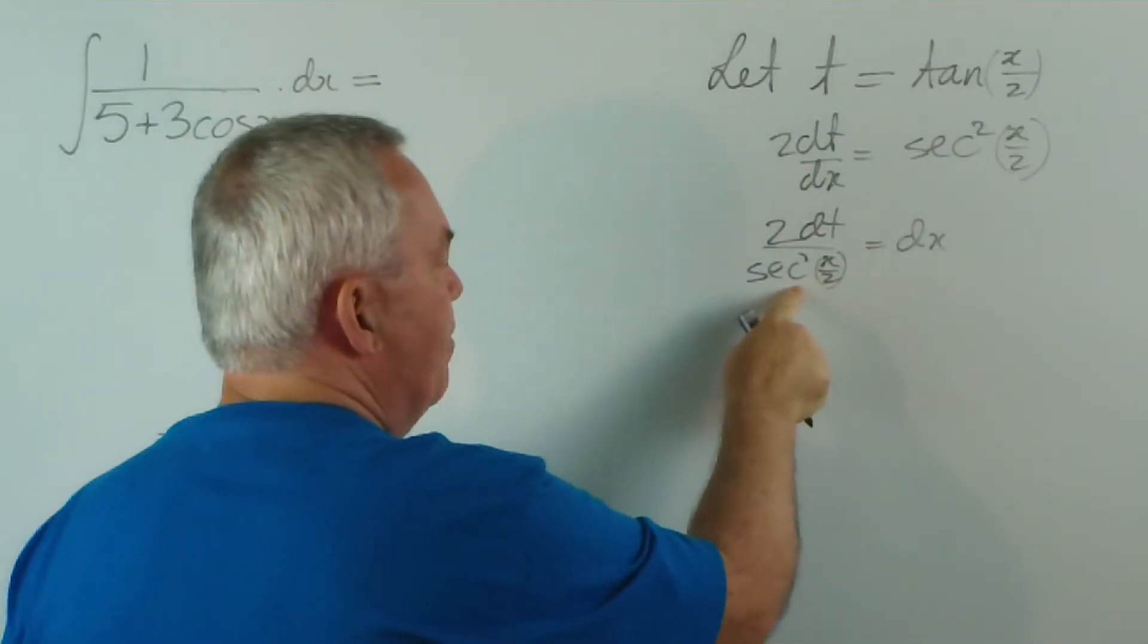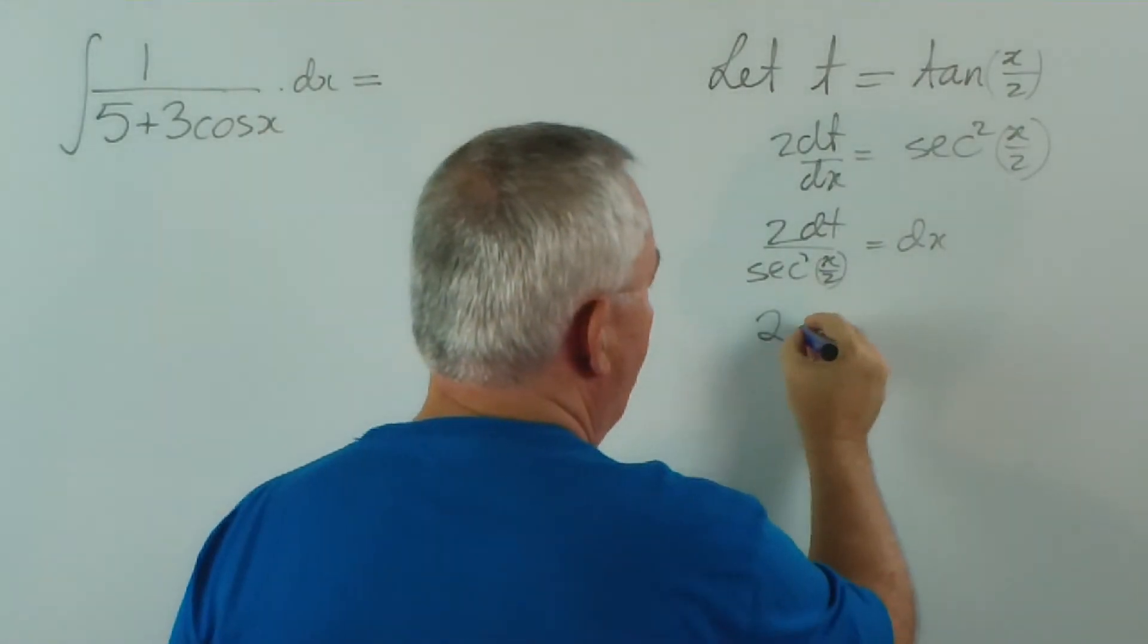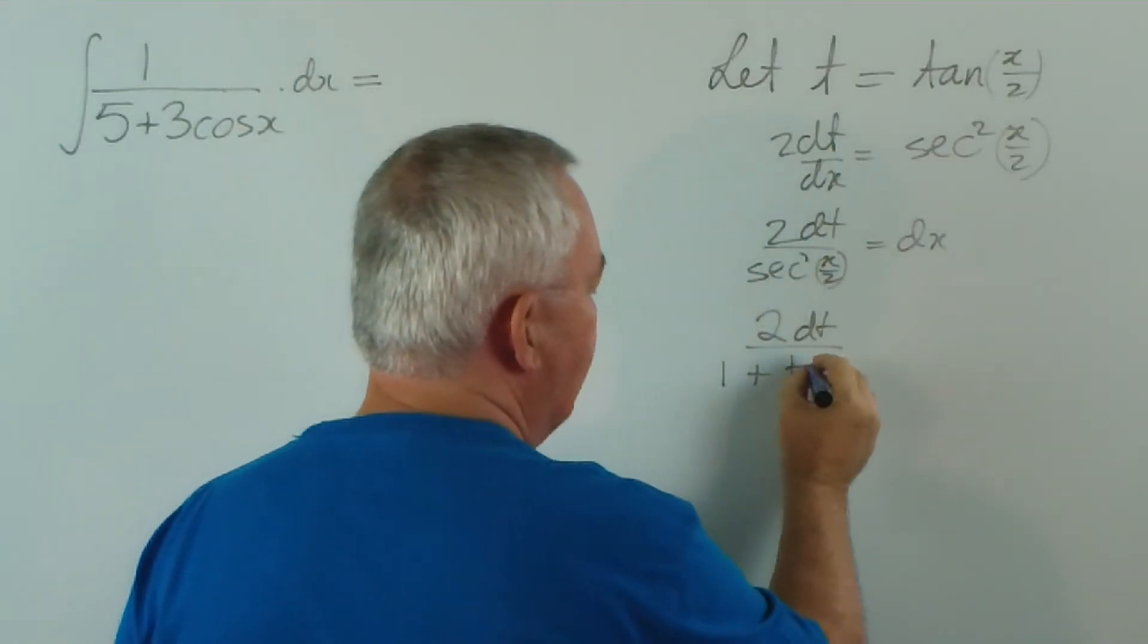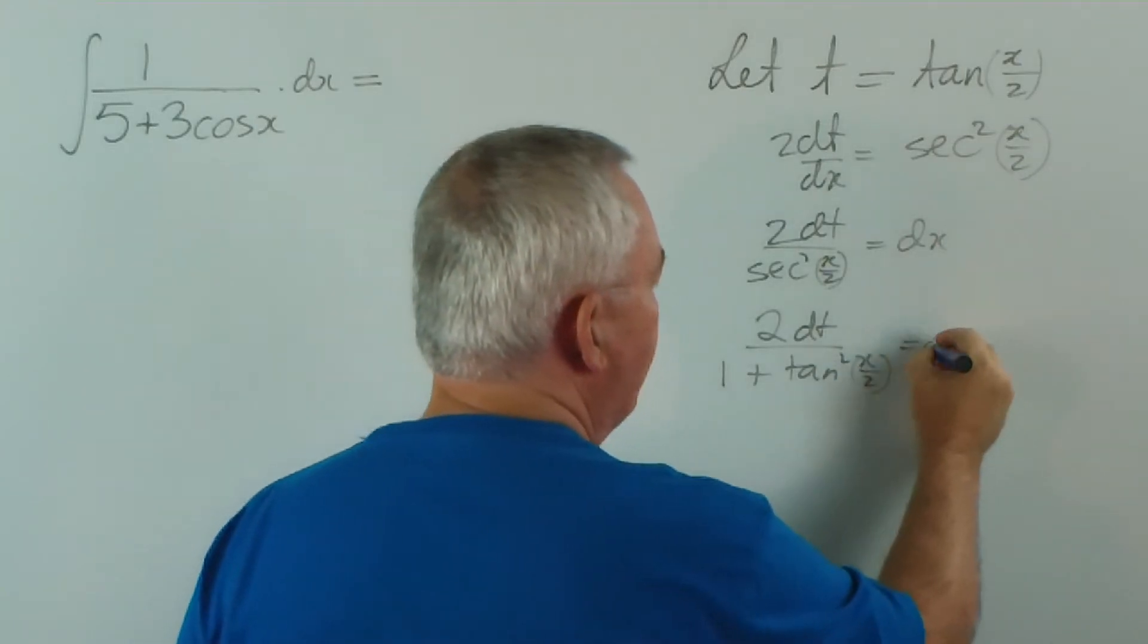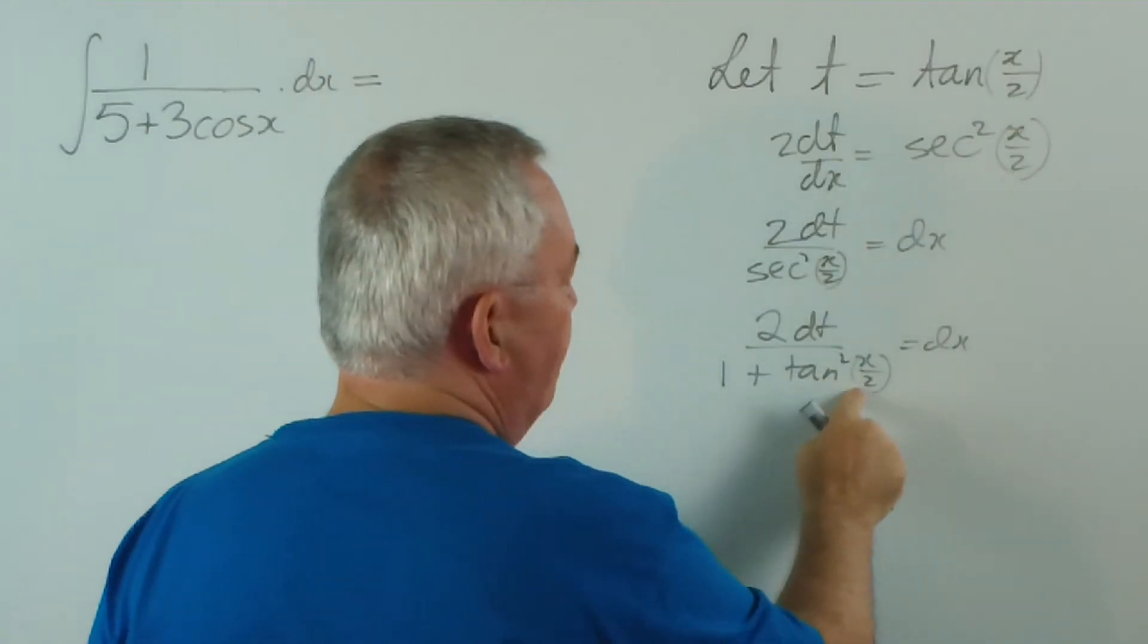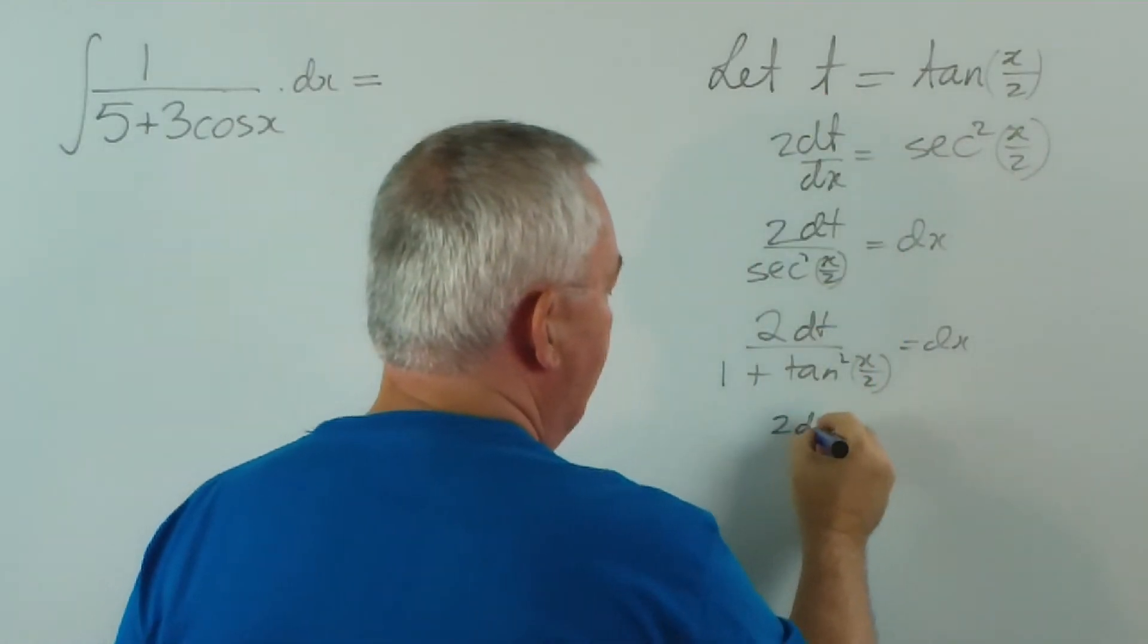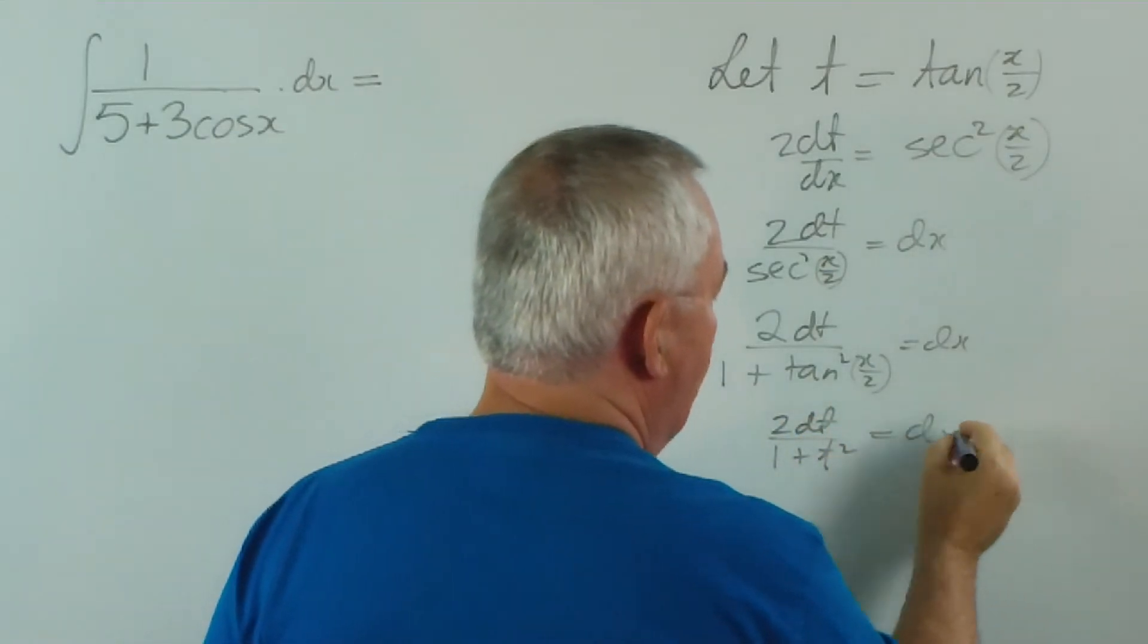Now, I can replace this with an identity. Sec squared of an angle is 1 plus tan squared of an angle, and there's our tan (x/2), and we've got to have it squared here so it's going to be t squared. So 2dt over (1 + t squared) equals dx.